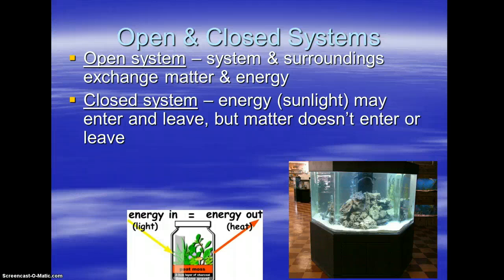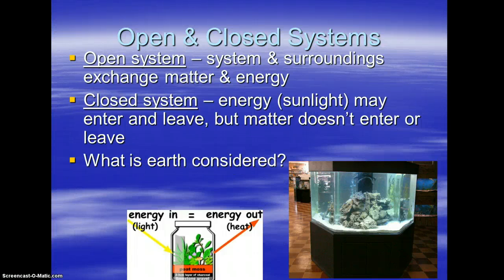Most systems in nature are going to be — what do you think? If you are thinking open, you are correct. Think of a forest or a swamp. You have rain coming into the system, gases being exchanged out — that's definitely matter going in and out. You have sunlight coming in, and heat exchanged with the atmosphere. So open system is what most natural systems are going to be. Closed system, however, is what Earth is considered.